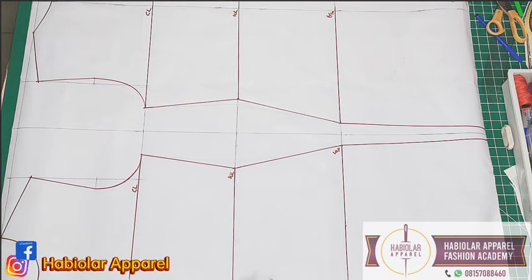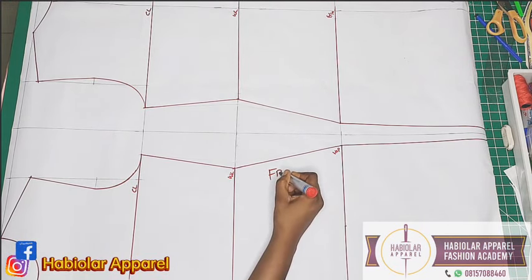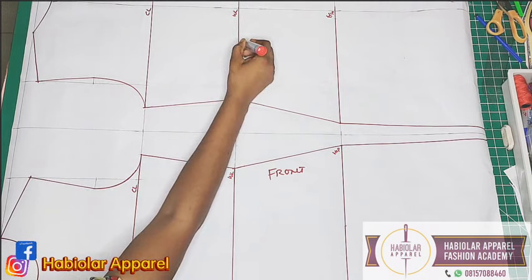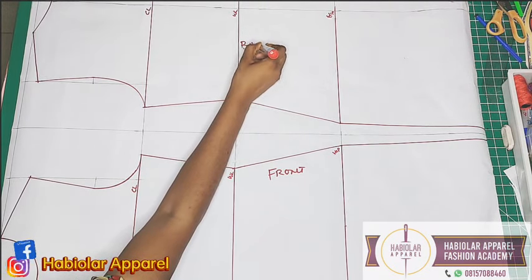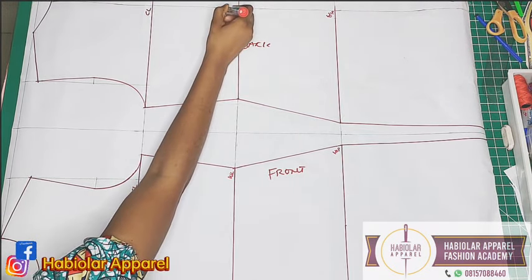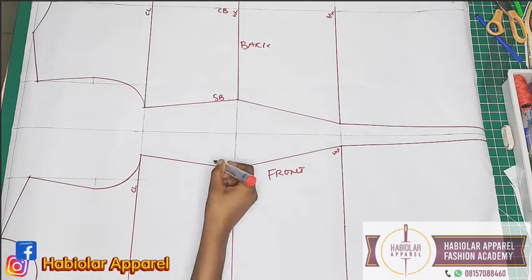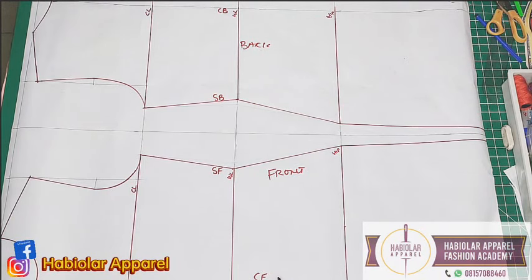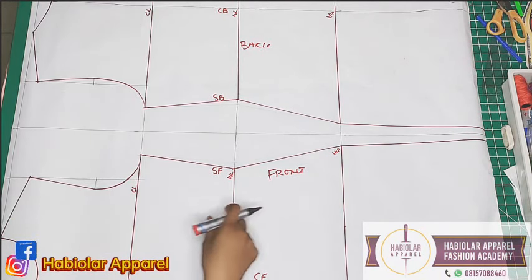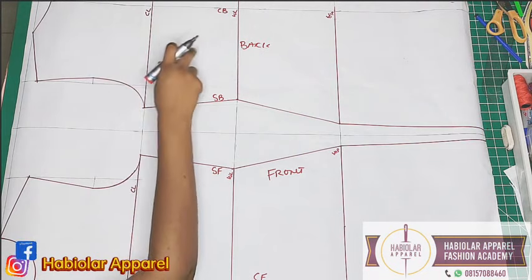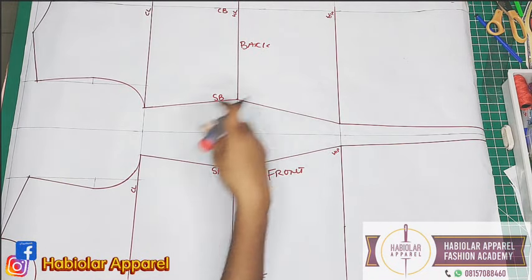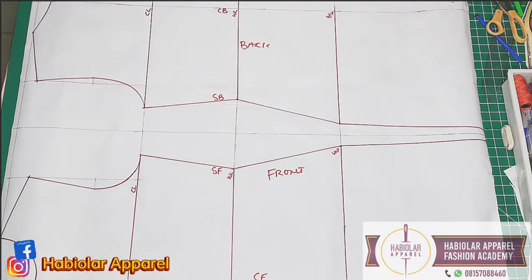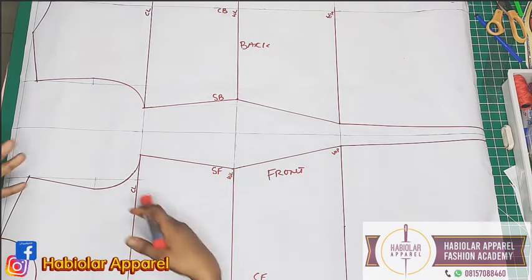This is the front of the gown and this is the back. This is the center back, side back, side front, and center front. I have my chest line, waistline, hip line, and gown length on both pieces. Like I said, just visit our link so you can know how we came about this basic gown.